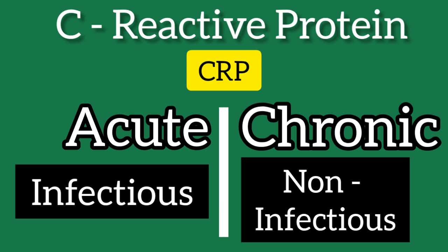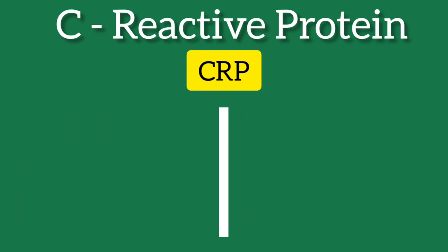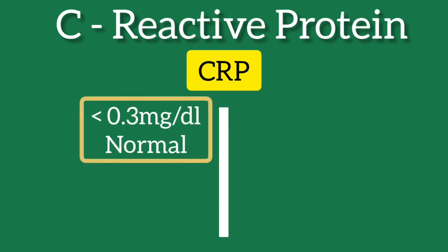The test for CRP level estimation is performed when the physician suspects acute or chronic inflammation such as SLE or rheumatoid arthritis, or infection. Laboratory values may vary and there is no standard at present, but values less than 0.3 mg per deciliter of blood are considered normal in most healthy adults.